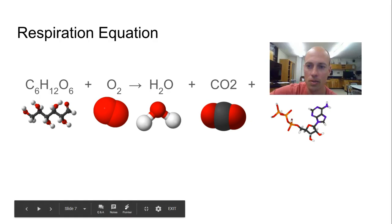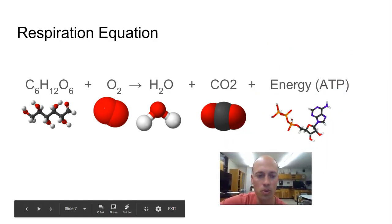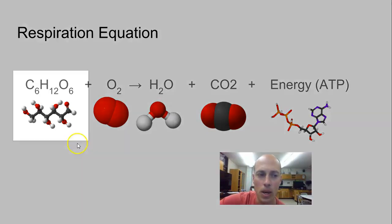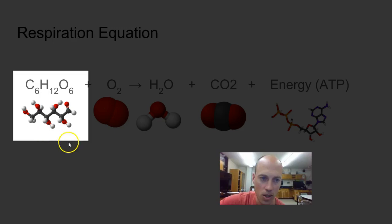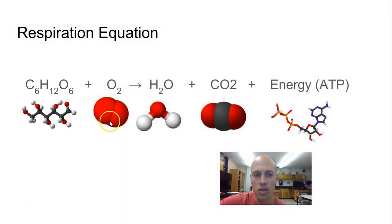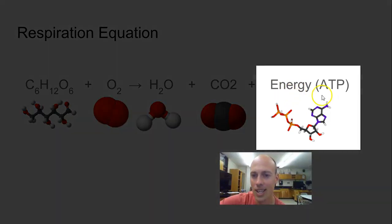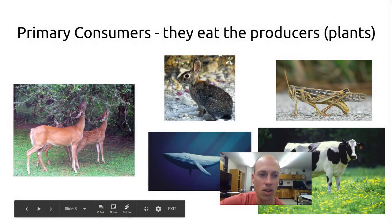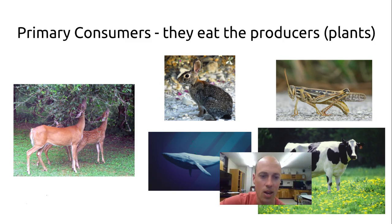Animals, of course, cannot make their own food to get energy from, as plants do. So they must do respiration, and we know about that. That is when we eat food, and in the presence of oxygen, can break that food down to get energy. So the organisms that you see here are animals, and they are consumers.